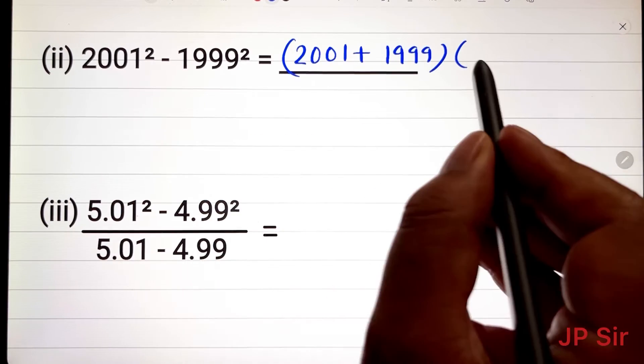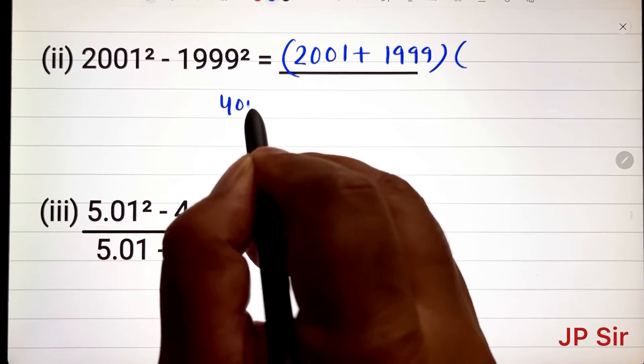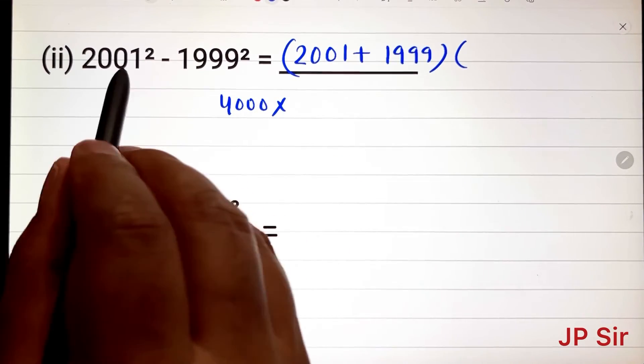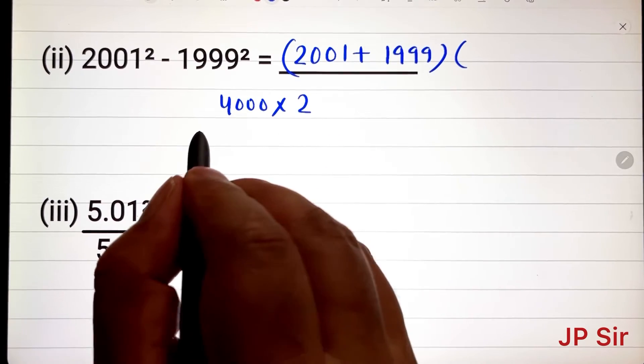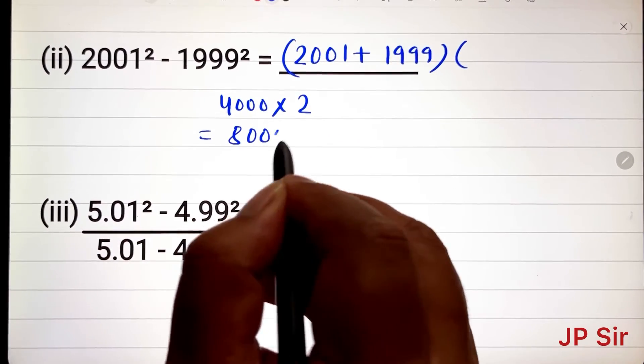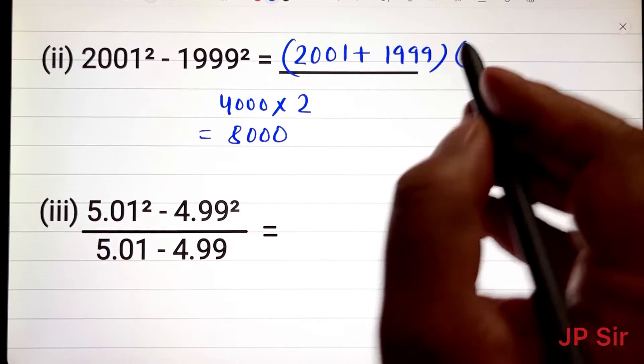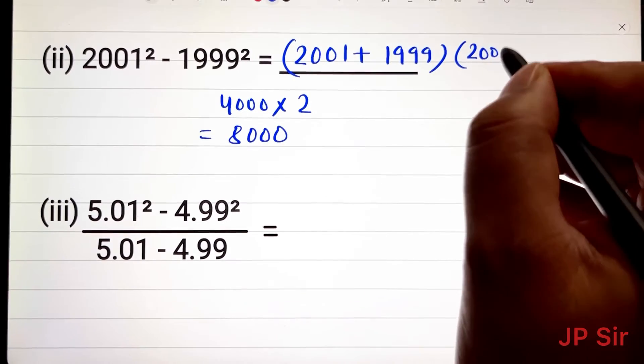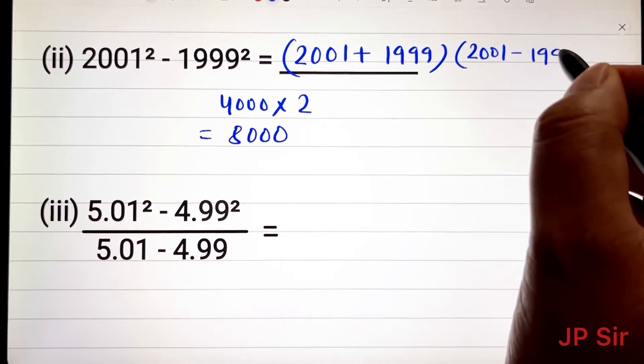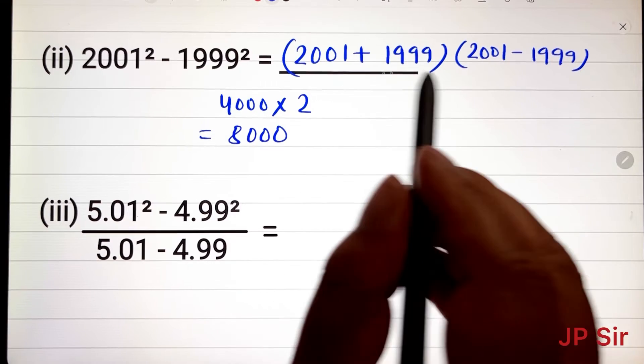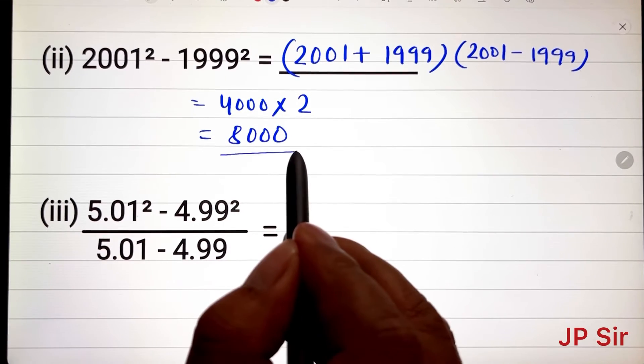then you don't even have to write it. You can just quickly write 4000 and you know the difference is 2 and it is 8000. So basically, first we add them, then we subtract, then we multiply them and this is the answer.